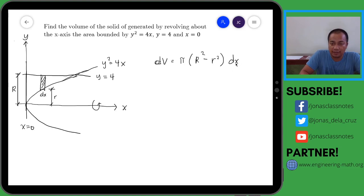So multiplied by dx. Now let us try to write this equation in terms of x. Okay, therefore the volume is equal to the definite integral. So we are going to evaluate this one from x equals 0 to this point. So what is this point? What is the value of x when y equals 4?